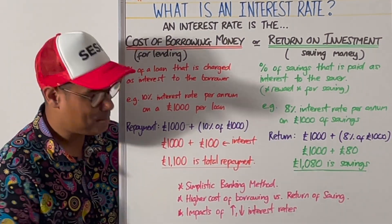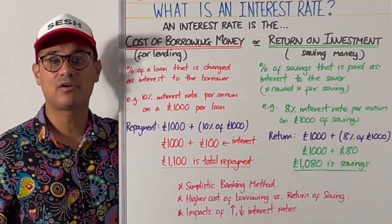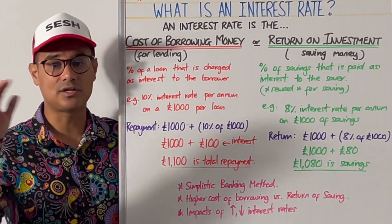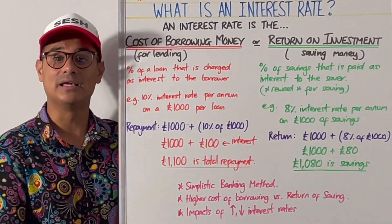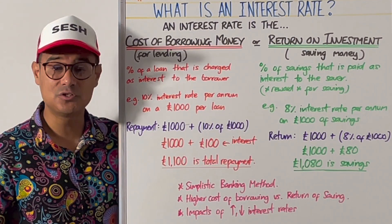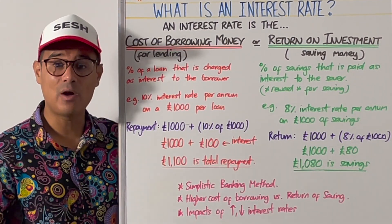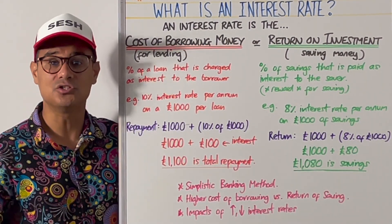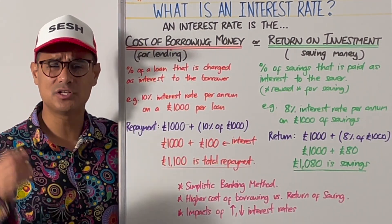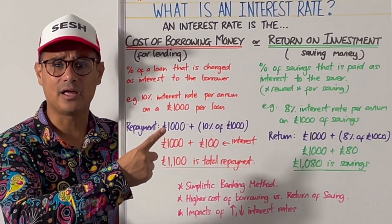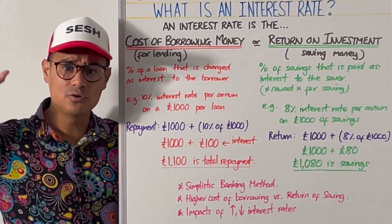The next thing to think about is the impacts of interest rates. Interest rates can go up or down — increasing or decreasing — and it's important to be aware of the different impacts on consumers and producers. For more details on that, click the card. I hope that helps and I'll see you at the next session.